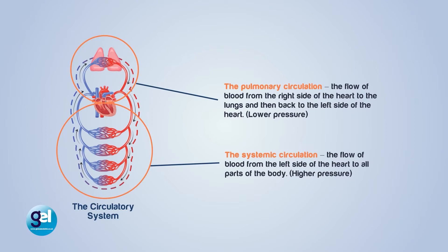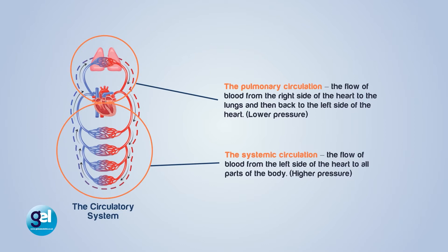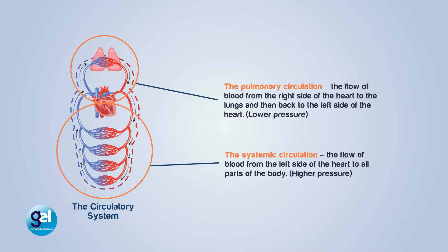If we break the circulatory system down into two segments, we have pulmonary circulation, which is the blood flow from the right side of the heart. Anything that comes out of the heart will have oxygen in it. It's going to have a lower pressure because it's going to be able to go down the body with gravity, so it doesn't need that build of pressure.